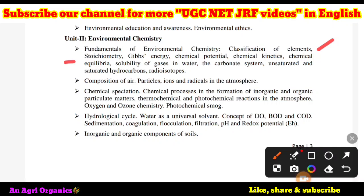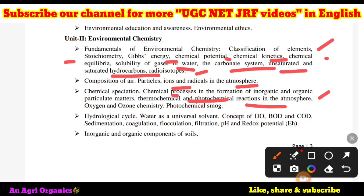Unit 2 is environmental chemistry. Topics include classification of elements (the periodic table), thermochemistry, Gibbs energy, chemical potential, chemical kinetics, chemical equilibrium, solubility of gases in water, the carbonate system, unsaturated and saturated hydrocarbons, and radioisotopes — all studied in 10th and 12th standard chemistry. Also covered are composition of air, particles, ions and radicals in the atmosphere, chemical species and chemical processes in the formation of inorganic and organic particulate matter, and thermochemical and photochemical reactions in the atmosphere related to fog and mist formation.